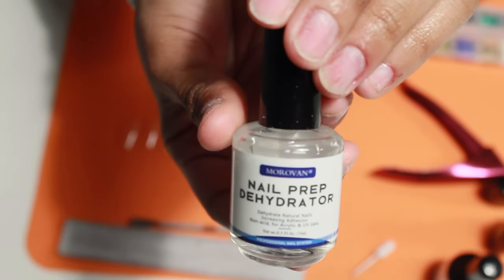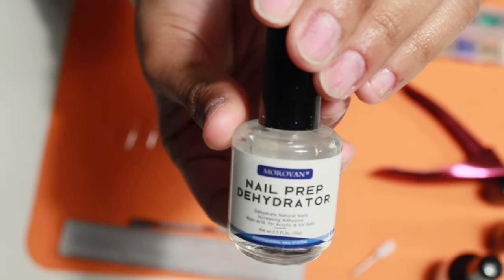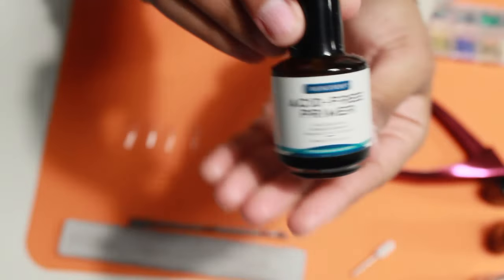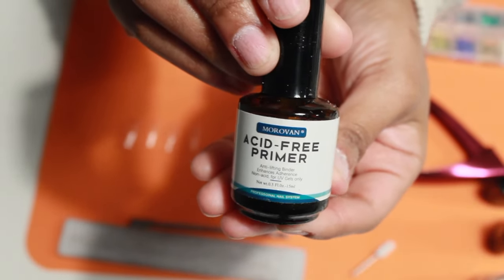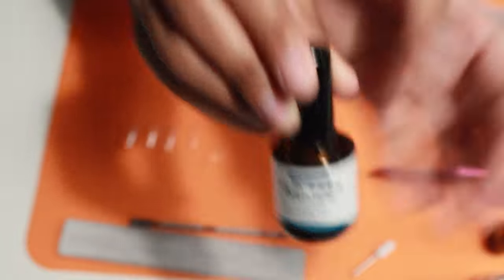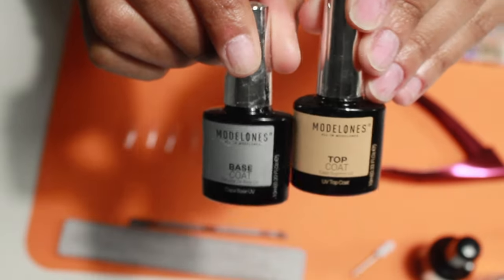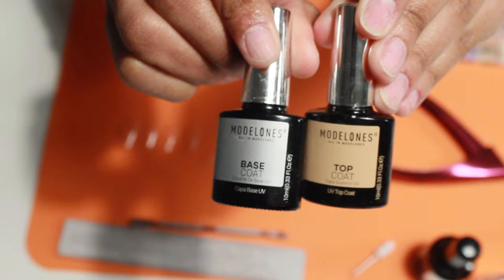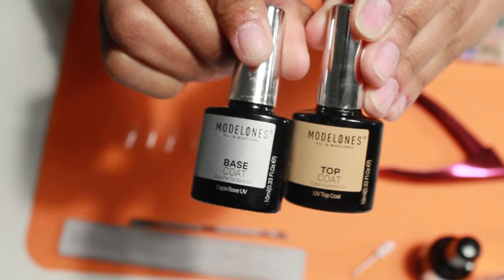I am using the Makartt nail prep dehydrator with the matching primer. I've been loving this stuff. I've been using it for a little over a year. And of course, my one and only is my Modelones base and top coat. I'm almost at the end of these, so it's time to restock and get a new one.